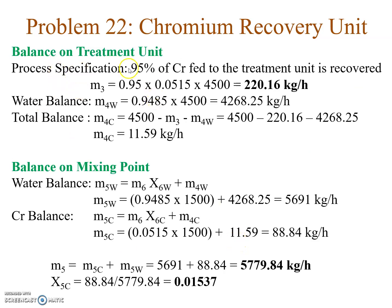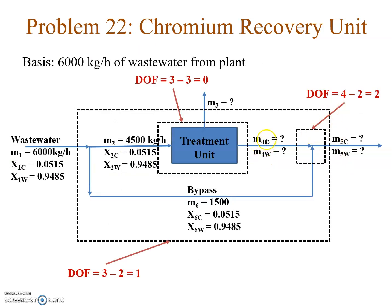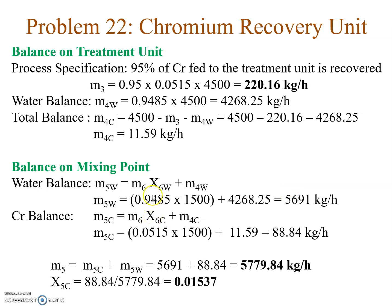We start by solving the treatment unit. Using the process specification directly gives M3; the water balance gives the water flow rate out of the treatment unit; and the total balance gives the chromium flow rate out. With those known, the degree of freedom at the mixing point reduces to 0. Taking water balance and chromium balance at the mixing point gives the mass flow rates of water and chromium going to the lagoon. The final stream to the lagoon is the sum of these: 5779.84 kg per hour, and the mass fraction of chromium is calculated from that.